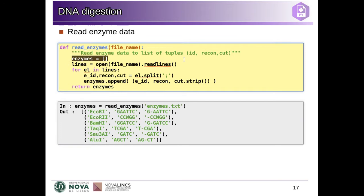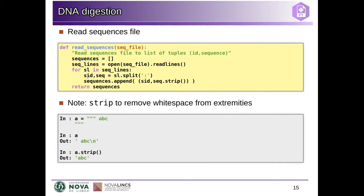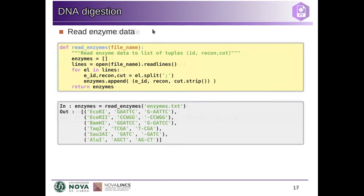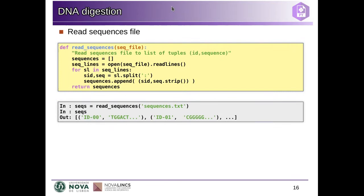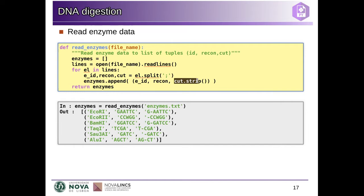Now we do the same thing for the enzymes. We also create an empty list, read all the lines, but now we split on the semicolon because this file has a different format — it has a semicolon separating the different fields. And now it has three different things in each line: the enzyme identifier, the recognition site, and the cutting point. So we append tuples of the three parts — the three attributes — and we also use strip on the last one to get rid of the newline characters.